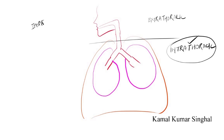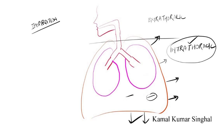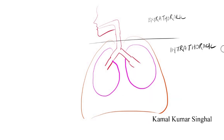In an intrathoracic airway obstruction during inspiration, as the thoracic cage expands it creates a negative pleural pressure. As the lung expands, the airways inside become larger, and so any obstruction would become less during inspiration in an intrathoracic airway.